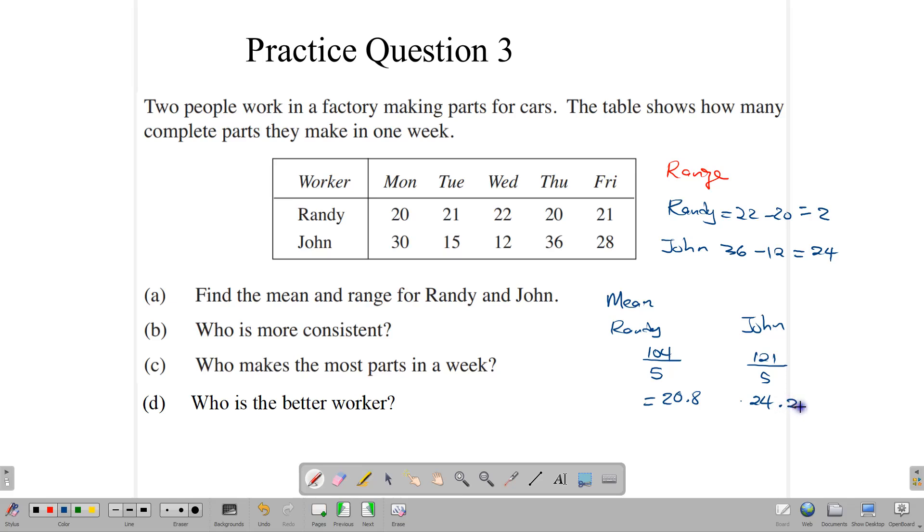So we are going to use these numbers to discuss some issues dealing with the two workers. And the first one is, who is more consistent? Looking at the numbers, you can see that Randy is obviously the more consistent of the two. And if you didn't know Randy's numbers and you saw his range, then his range would tell you that he's more consistent because his range is small. And a small range means consistency. Numbers are close to each other. So Randy is more consistent as compared to John. Who makes the most parts, though? Definitely. John makes the most parts. He has a higher average, and he has a higher number of parts, 121 compared to 104. So this is definitely a win for John.